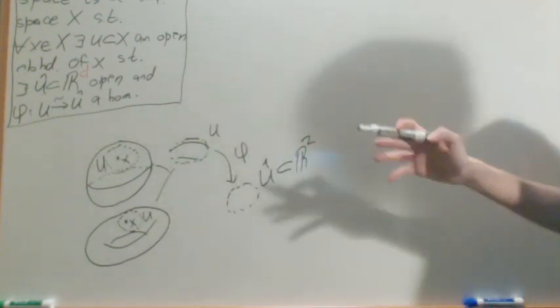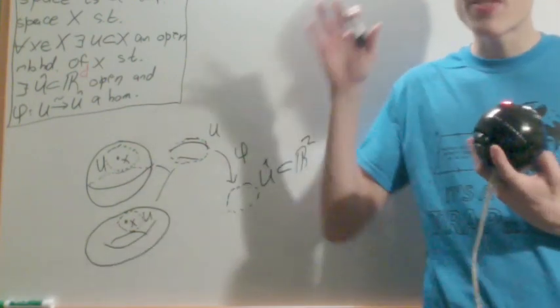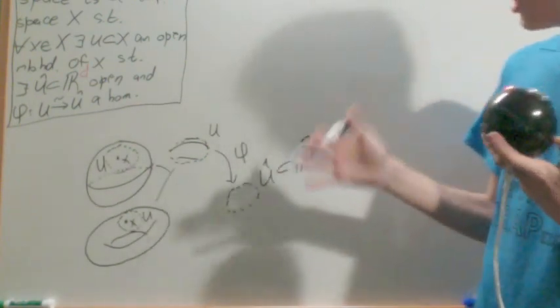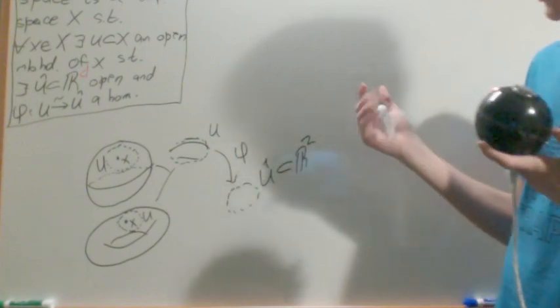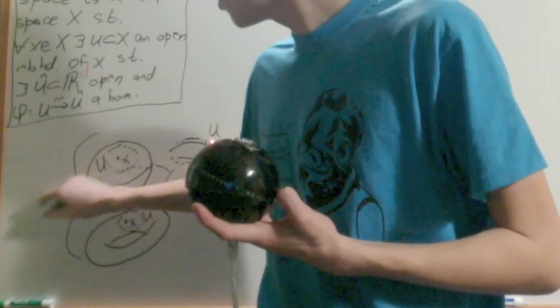So a locally Euclidean space is one that, if you zoom in close enough, it will look flat. And this basically means good for calculus.